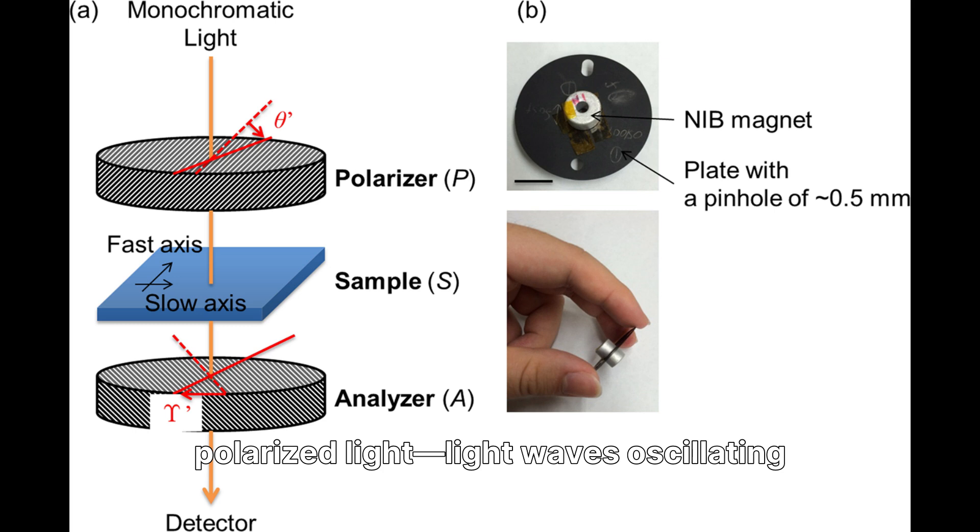Picture a beam of polarized light, light waves oscillating in one specific direction, passing through a crystal surrounded by magnets. As it travels through, the plane of polarization rotates.